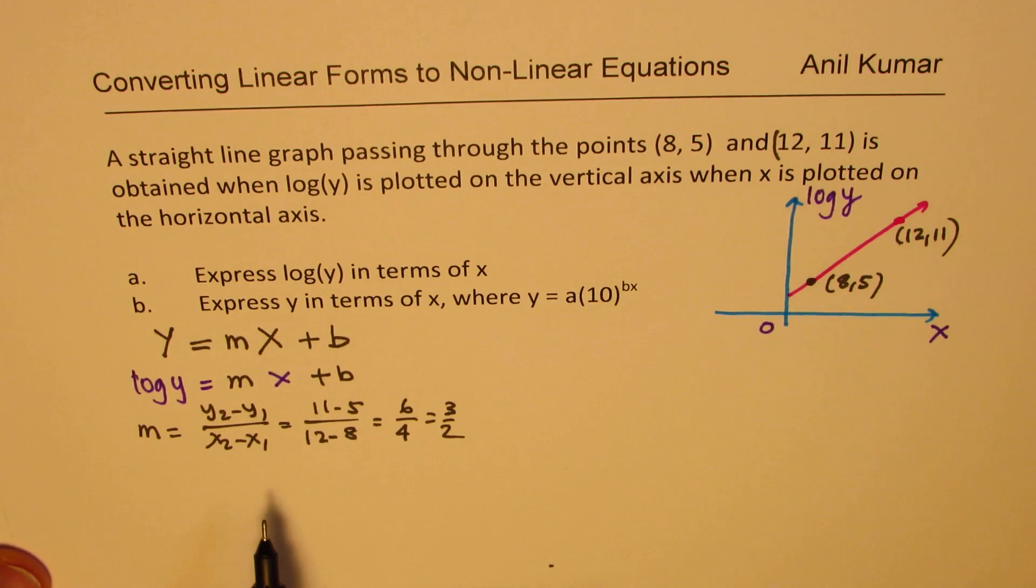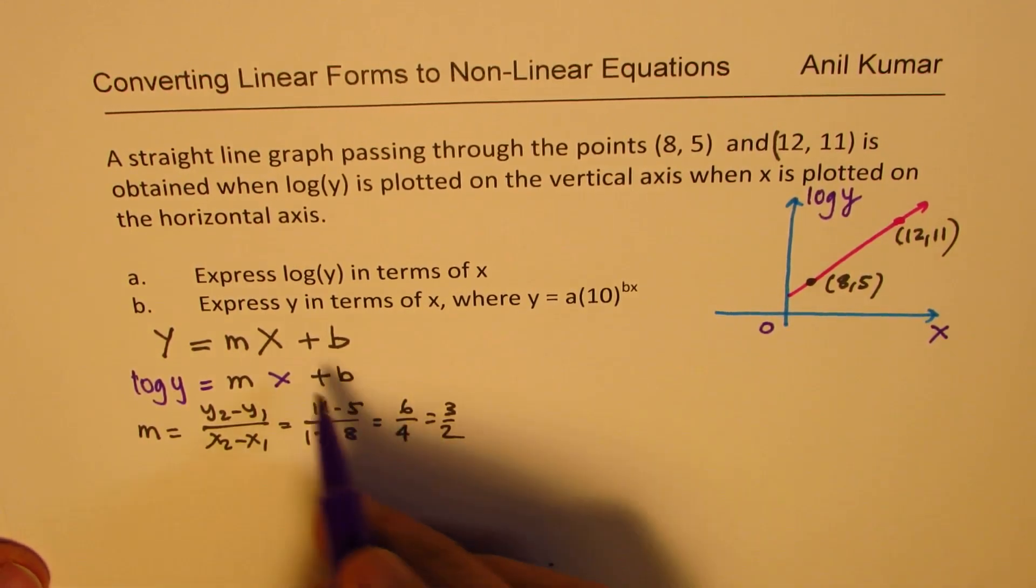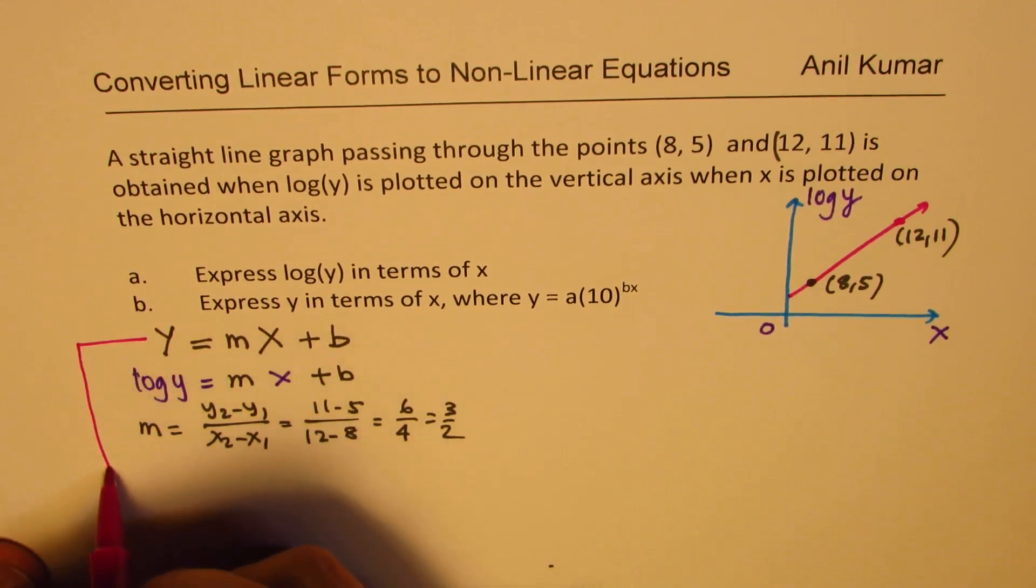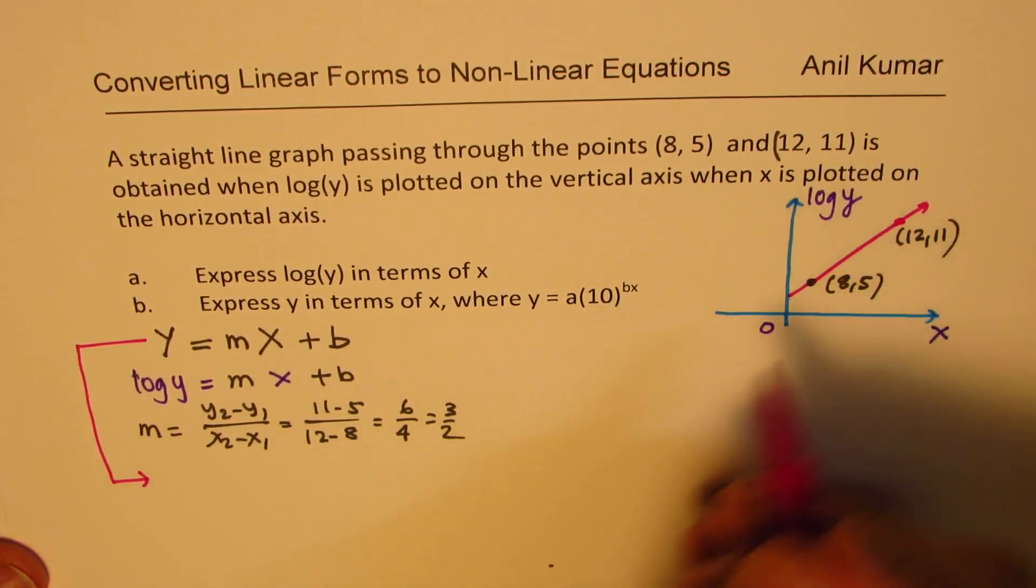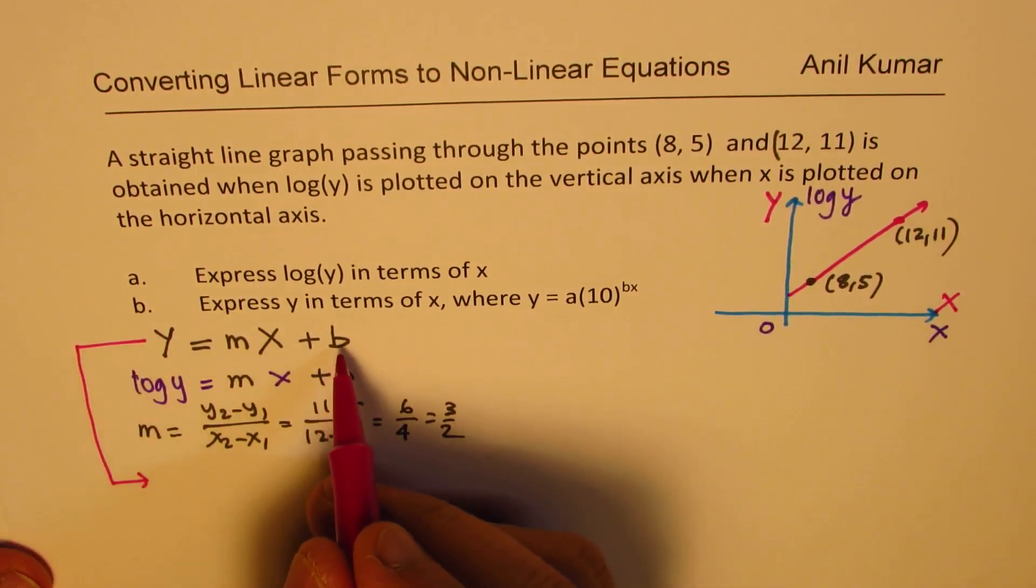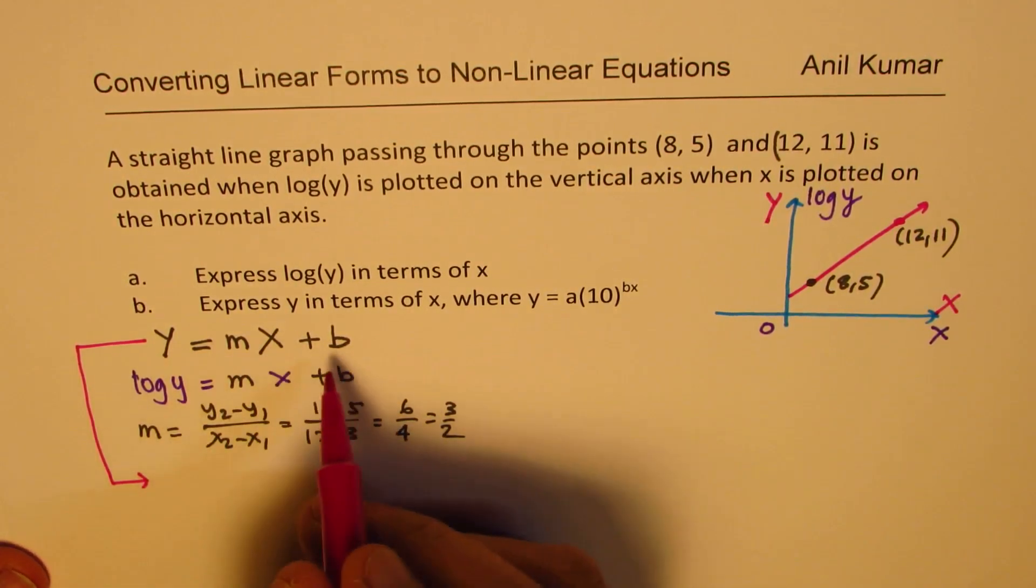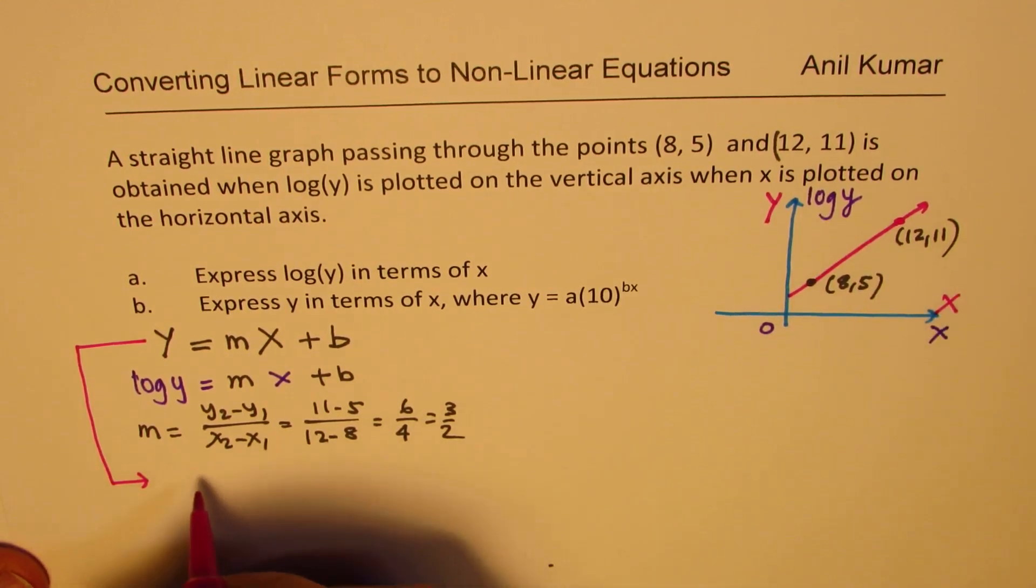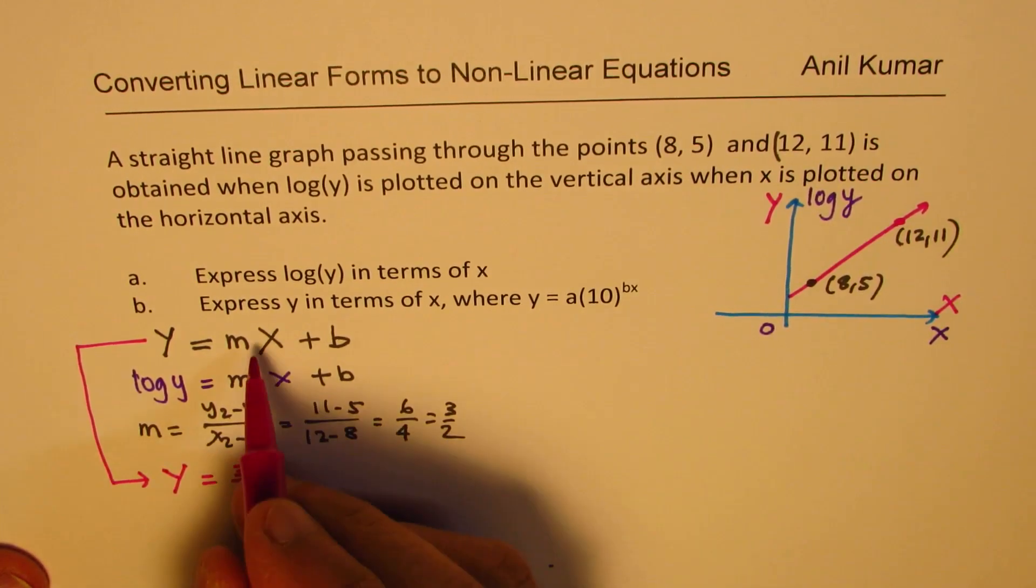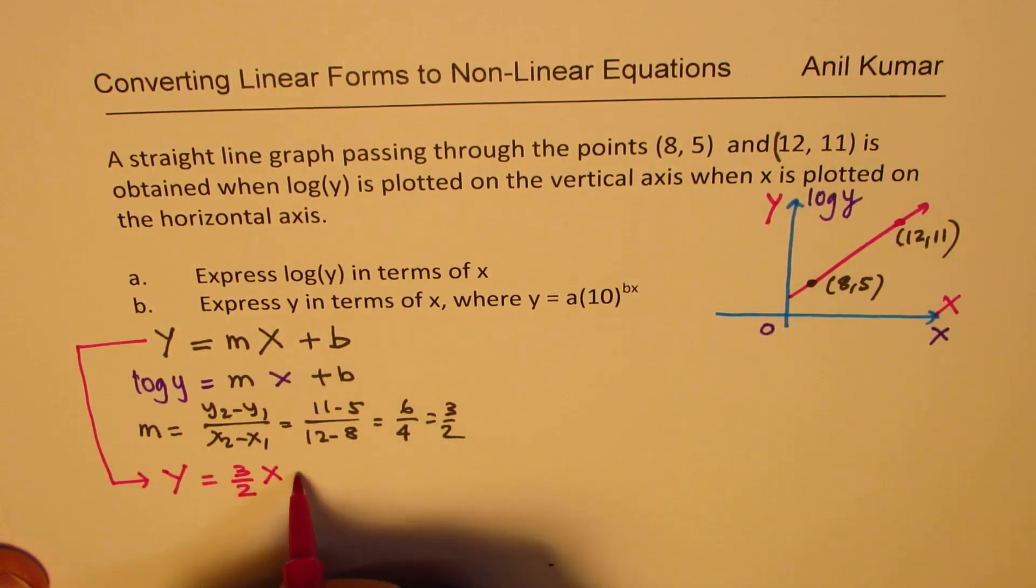Now we know m. How do we find b? So we know m. Therefore we can actually now write down our equation. With this equation, which is the same equation, we're saying this is capital Y for us and this is capital X. So to find the y-intercept on this particular graph, we can say that y equals m, which is 3/2, times x plus b.